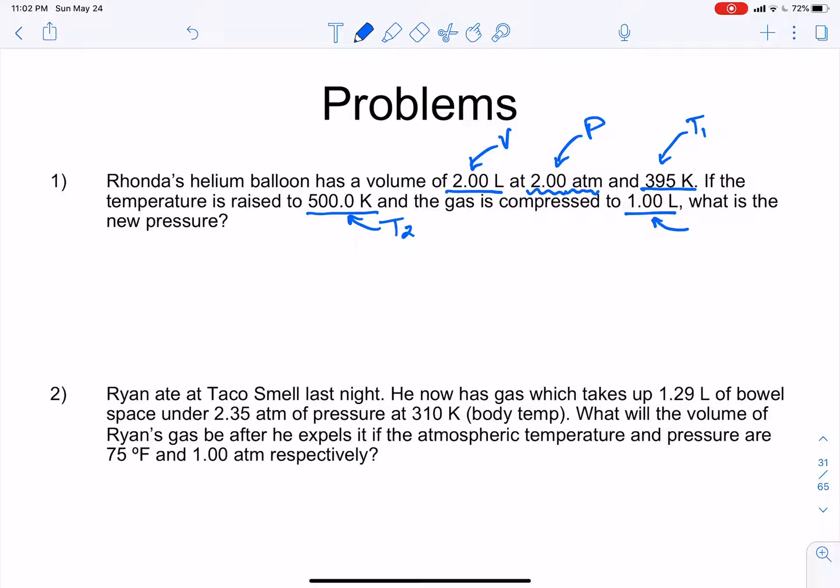The gas is compressed to 1 liter. So is that a V, a P, or a T? That's a V. That's a volume. So if we have two volumes, we've got to have a V1 and a V2. And then it says, what is it?